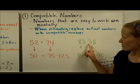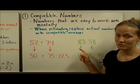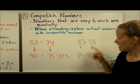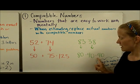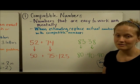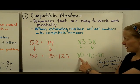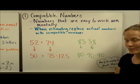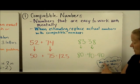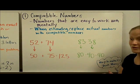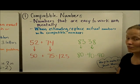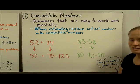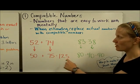For 83 minus 38, I can change them to compatible numbers. 83 could go to 80 and 38 could go to 40, and I would get an estimated difference of 40. 80 minus 40 is 40. So when you're doing compatible numbers, you might want to think of ways to make 10 or ways to make 100, and another strategy is to think money, like we did with the first problem.